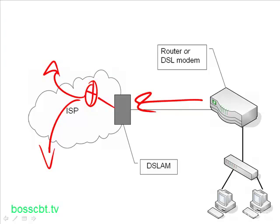Here you can see we have our home or business user with the DSL router or modem. It connects via DSL to a POTS line into the DSLAM, which is owned and operated either by a telco or an ISP, and they route traffic to and from the Internet.